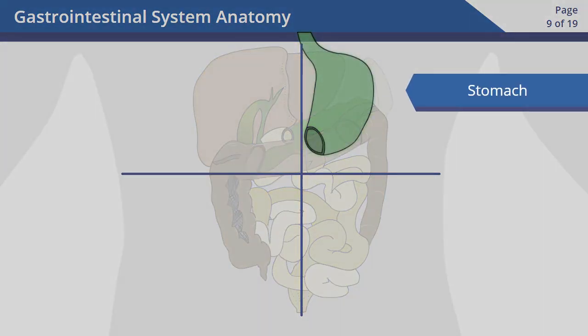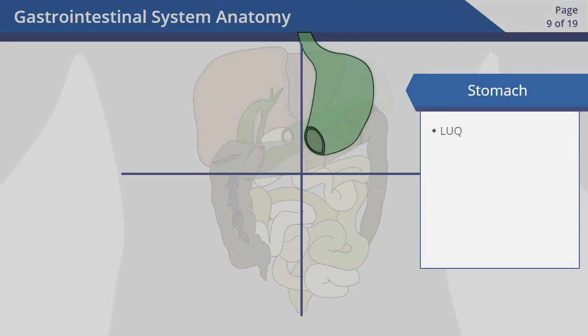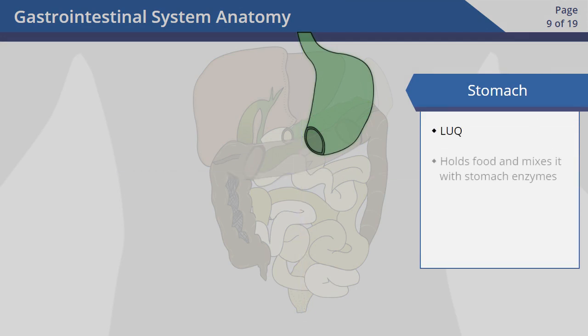The stomach is located between the esophagus and small intestine in the left upper quadrant. This muscular organ holds food and mixes it with stomach enzymes. This breaks down food so it can be absorbed into the body.